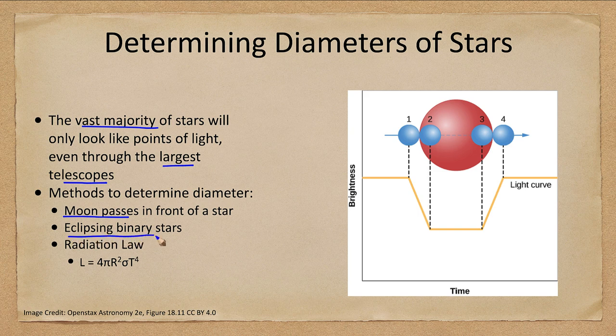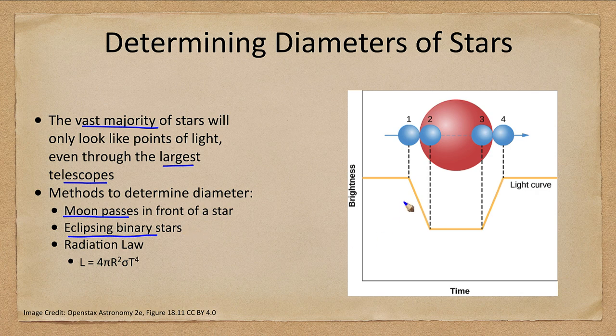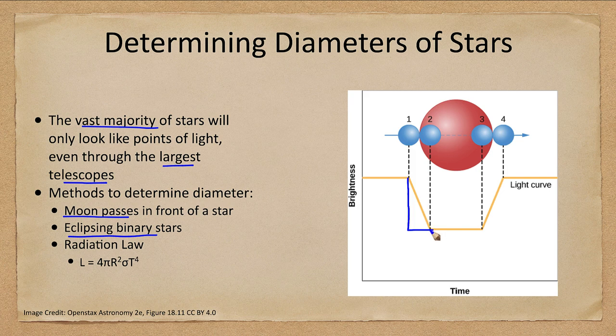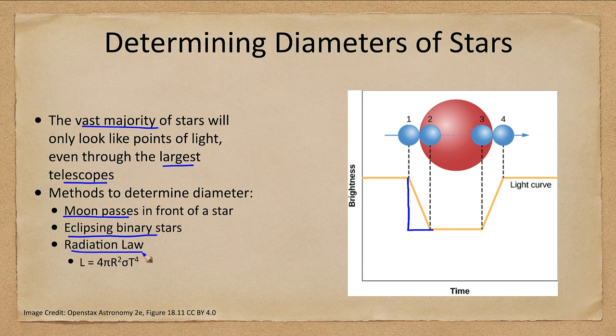Eclipsing binary stars can also be used to do that. When one star passes in front of another, if the star were infinitely small it would just immediately drop down. The amount of time it takes to dim tells us something about the size of that star. And we can use the radiation law.